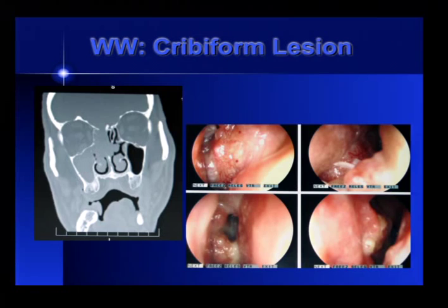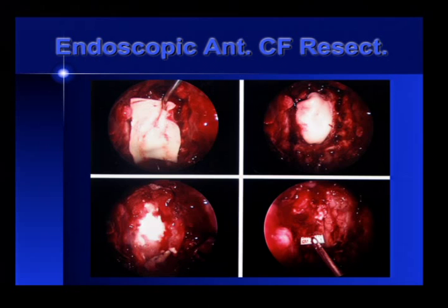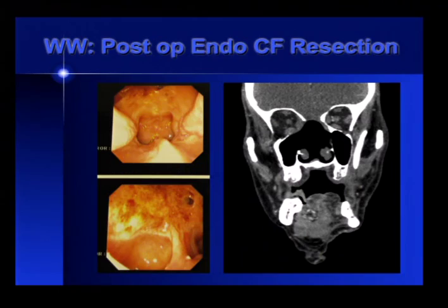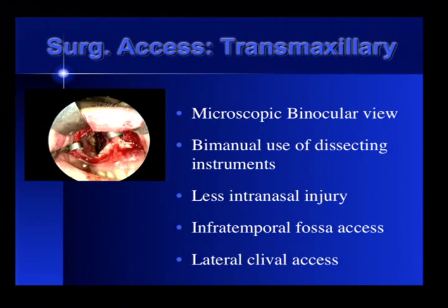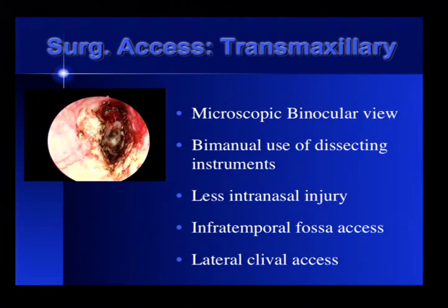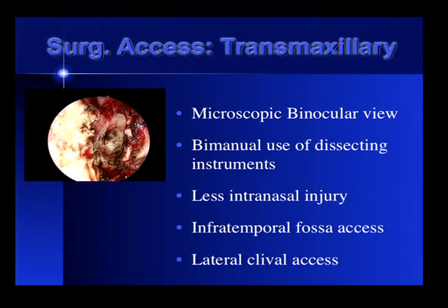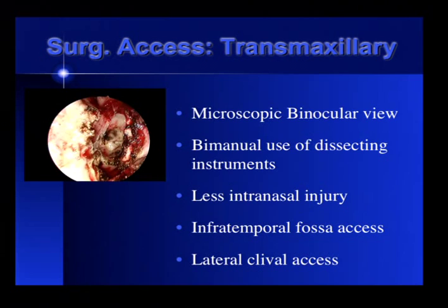If you're really nice to patients, the most important thing for residents is you get cookies — and if you're really good, sometimes you get a birdhouse like this, which is now hanging in my backyard. So what is transmaxillary? It's microscopic binocular view. Your assistant surgeon can also be binocular and have two hands — four hands in the wound. There's no intranasal injury most of the time, and it's beautiful for infratemporal fossa access and lateral skull base. Thank you very much.